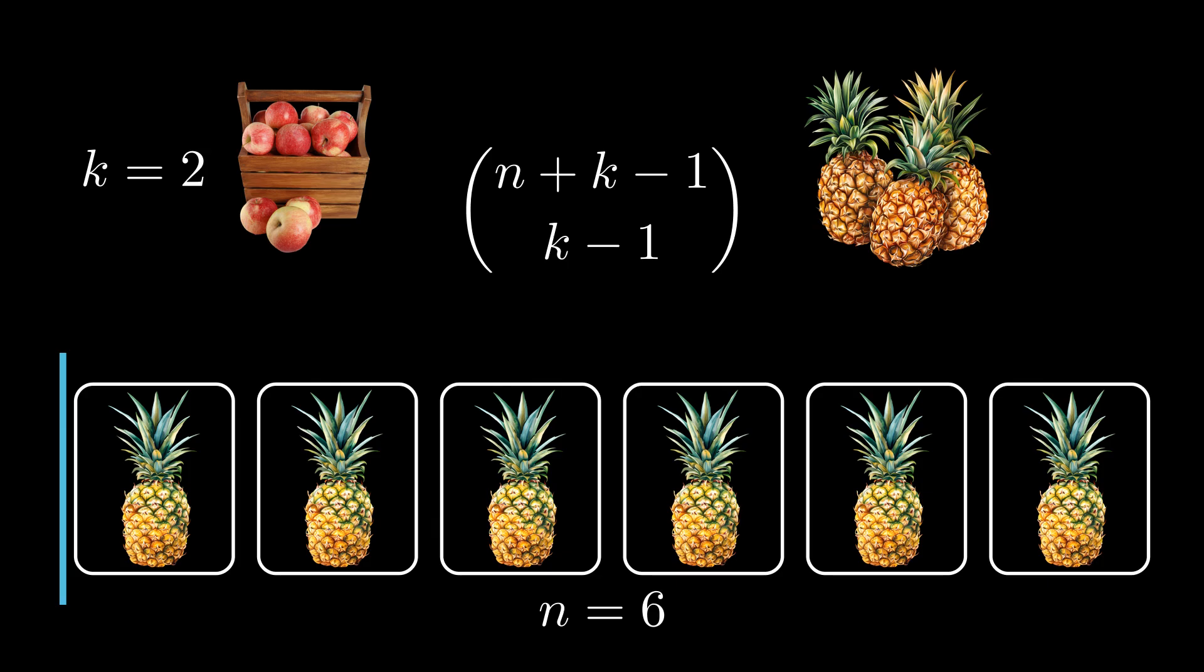In our case, we have six fruits with two different types of fruit, and we can group them in seven ways in total. This is called a combination with repetition. Thank you for watching the video.